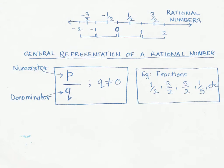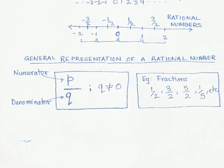So how do we represent rational numbers? It turns out there is a general representation. Rational numbers are represented in the form of p/q, where q is not equal to 0.